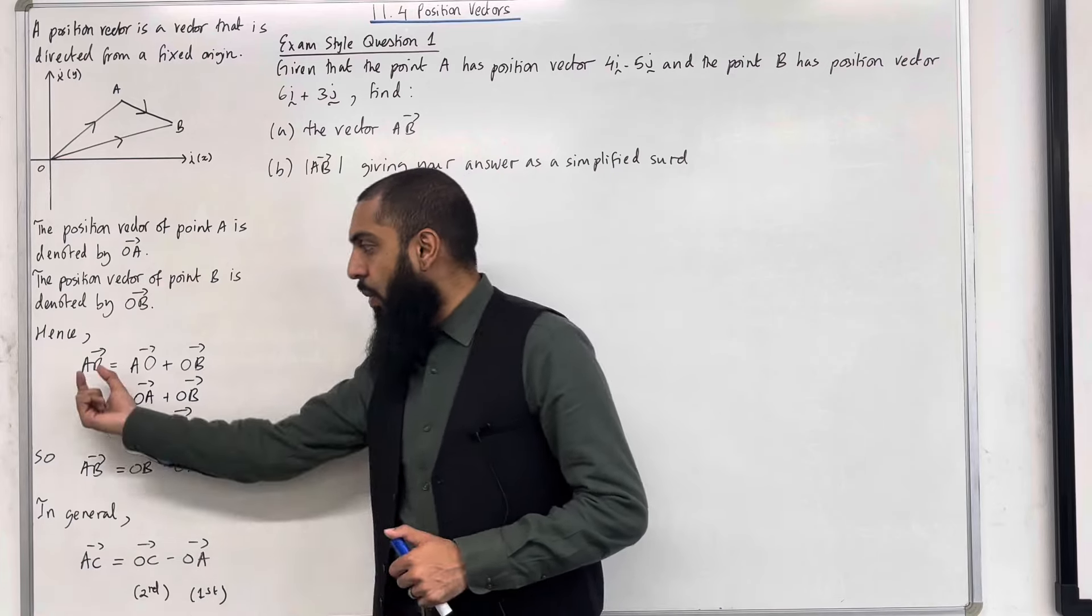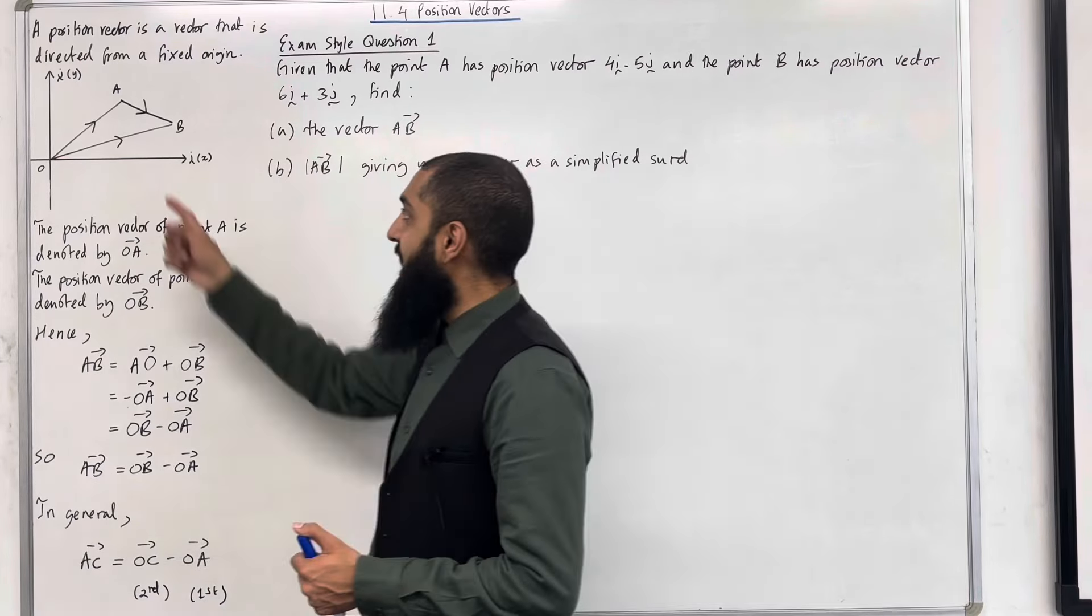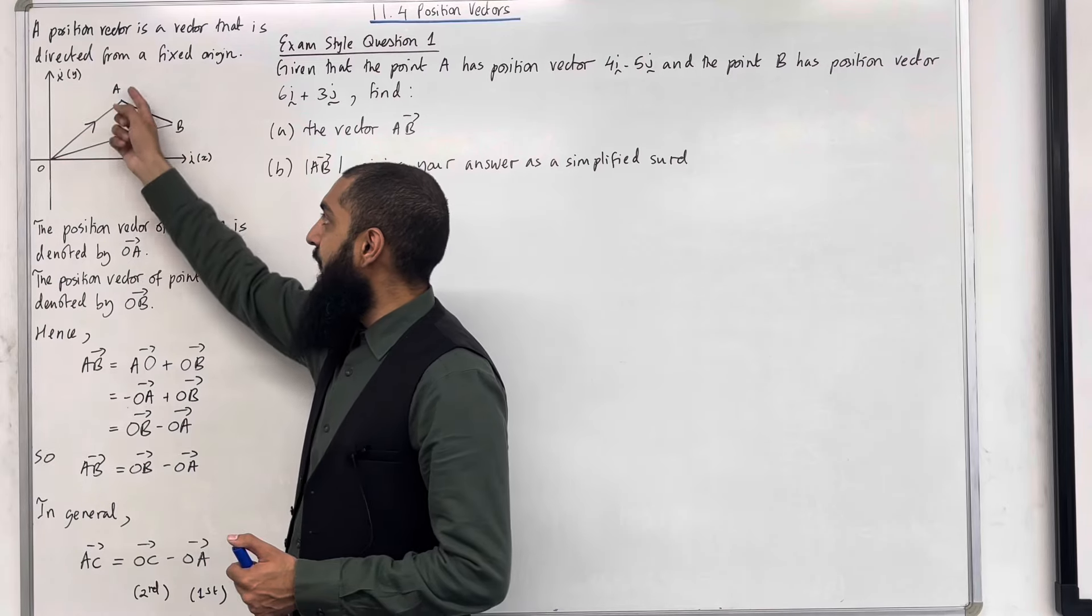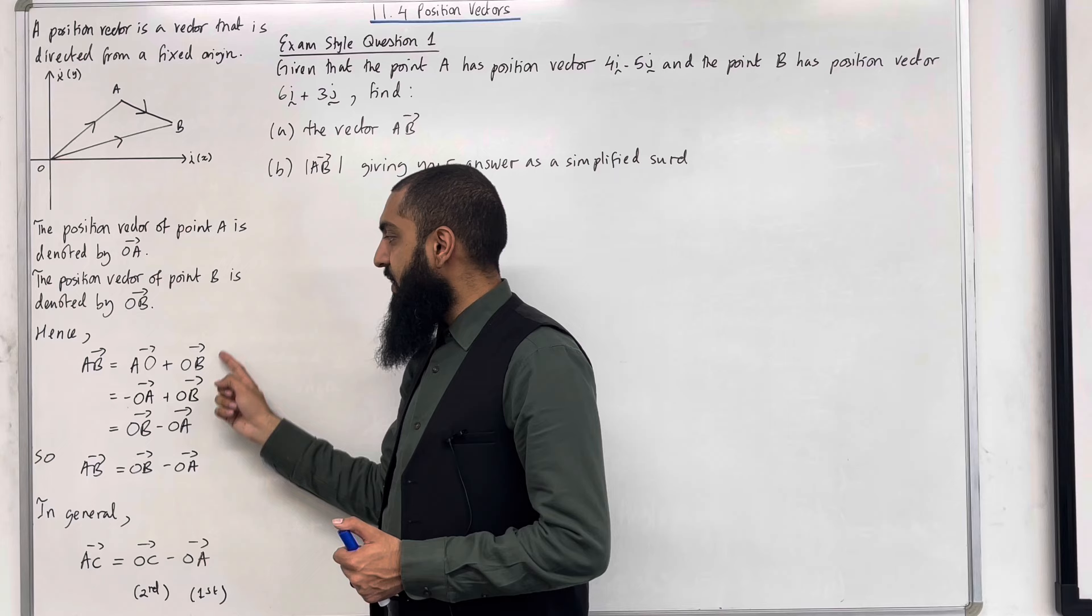Hence, now we're going to work out the vector A to B. So if I go back to the diagram, I can see that to get from A to B, I need to do A to O plus O to B.